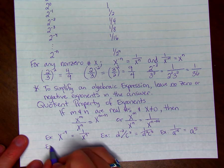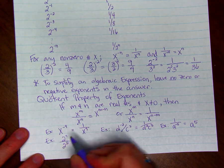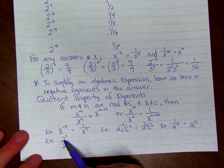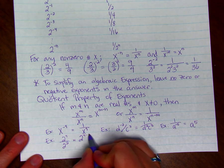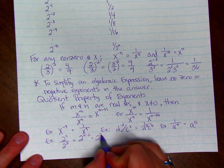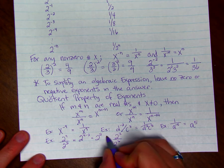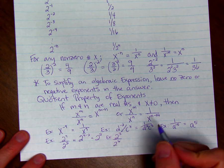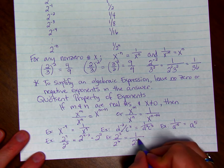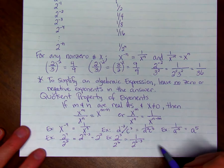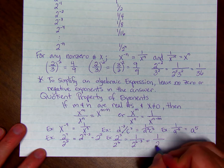Here's an example using the quotient property. If we have 2 to the 4th divided by 2 squared, we have the same base. So we can say that's equal to 2 to the 4 minus 2, or that's equal to 2 squared. If we had 2 cubed over 2 to the 6th, this is another example. We could say that's 1 over 2 to the 6 minus 3. This is by the quotient property, which is 1 over 2 cubed.